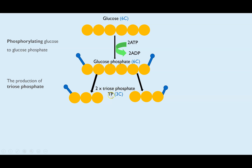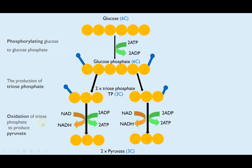Triose phosphate is sometimes abbreviated to TP. Triose is the name for a three-carbon sugar, and phosphate refers to the fact it has one phosphate group attached to it. The last step is that both of those triose phosphate molecules are oxidized. The way we can tell they are oxidized is because the coenzyme NAD is picking up a hydrogen from the triose phosphate. So NAD is converted into reduced NAD, or NADH, and that happens on both molecules — the NAD is reduced, whereas the triose phosphate is oxidized to form pyruvate.